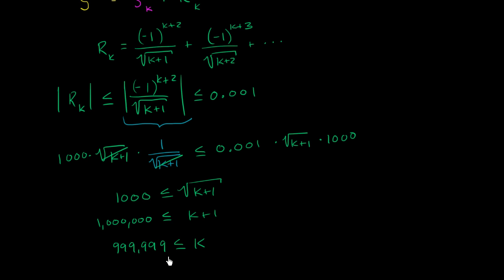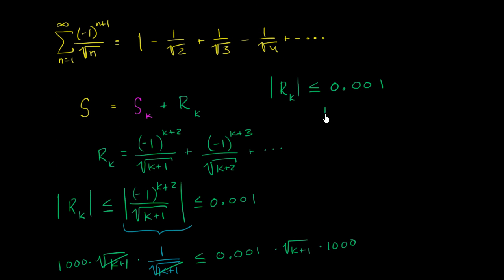Since k has to be greater than or equal to 999,999, the minimum k that satisfies these conditions is k equals 999,999. Now let's convince ourselves that if we take the partial sum of the first 999,999 terms, the absolute value of the remainder is actually going to be less than 0.001. So far we've worked from that premise — let's actually look at it and feel good about it.